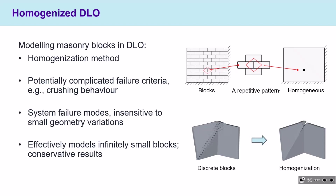The homogenized approach will be insensitive to geometrical variations. From personal experience, if you have small errors in a rigid block model, you get local failure modes — this method prevents that. Also, the method assumes that the blocks are infinitely small and only the aspect ratio matters, which will give us conservative results.